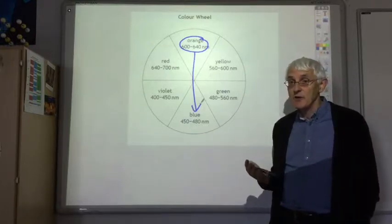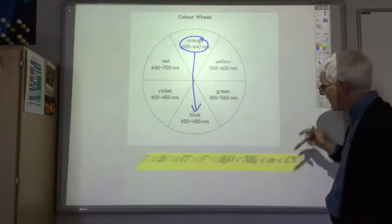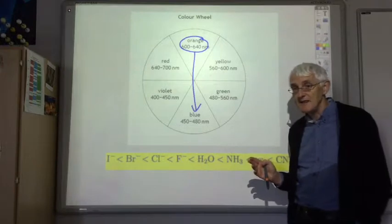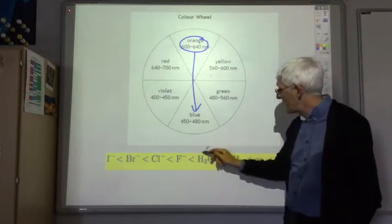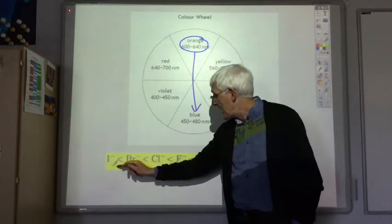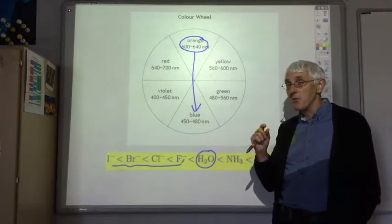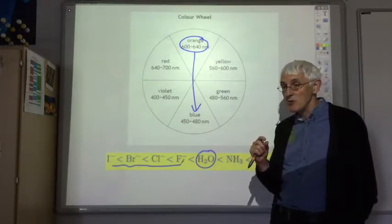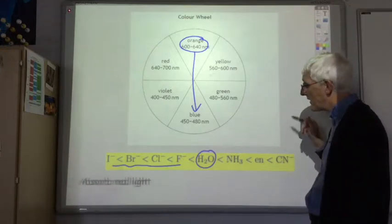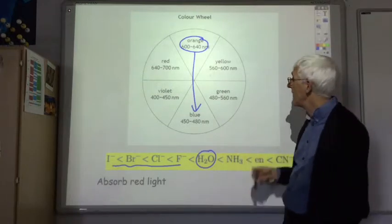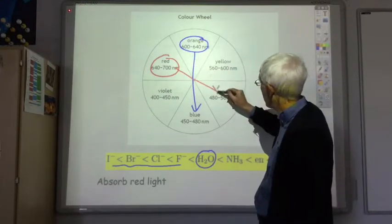If we used a different ligand instead of water, that can cause the d orbitals to be split by a different amount. This list is known as the spectrochemical series and gives you an indication of how much any one ligand will split the d orbitals. The halide ions split the d orbitals by a smaller amount than water, so the complex would absorb a lower energy of radiation — a longer wavelength — meaning halide ion complexes are more likely to absorb red light, which is lower energy and higher wavelength, producing greenish compounds.